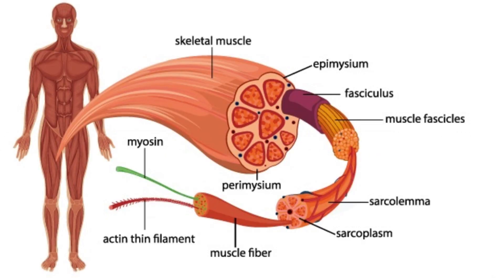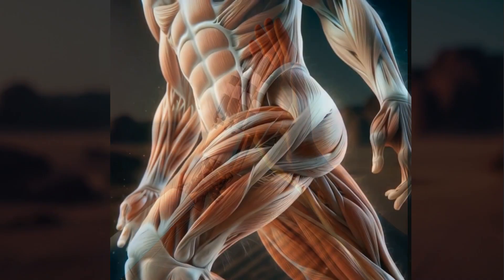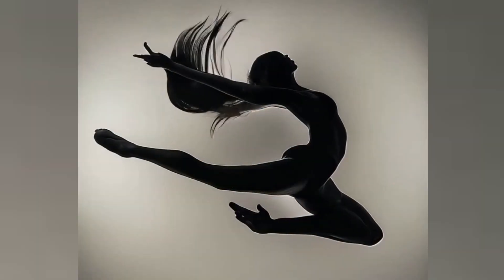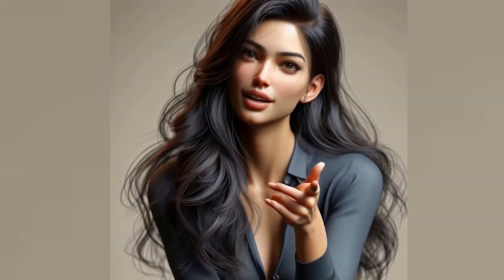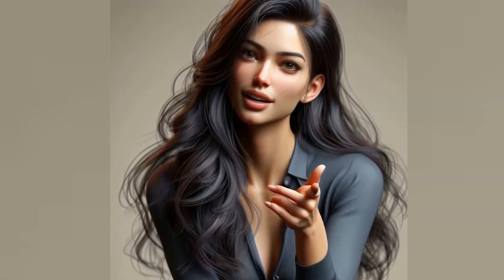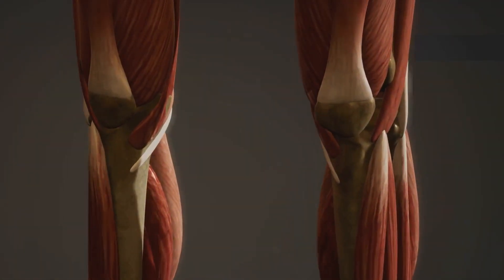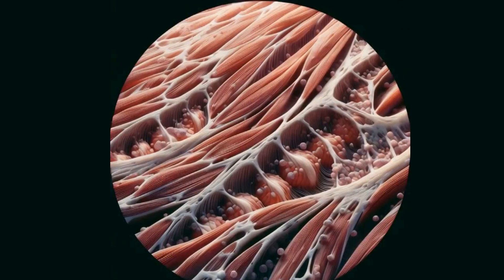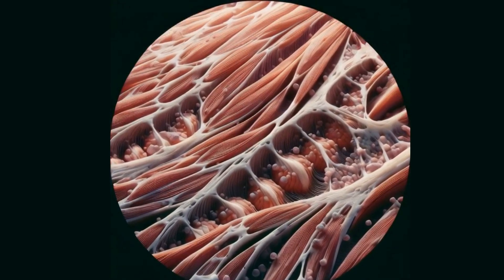Striated or skeletal muscles are the muscles that we control voluntarily. They are responsible for all our conscious movements, from dancing to typing, even the very act of speaking. These muscles are so named because they are mostly attached to our skeleton, and striated refers to their unique striped appearance under a microscope.